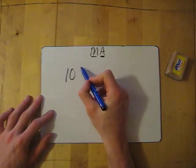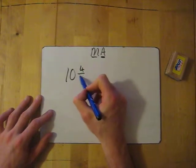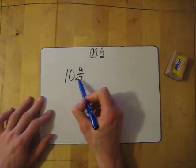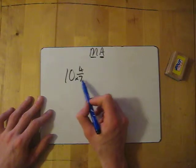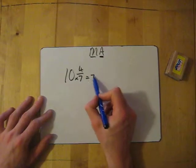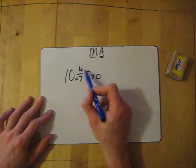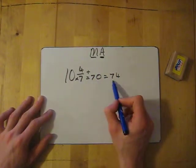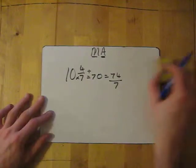10 and 4 sevenths. So MA, multiply and add. So multiply the 10 by the 7, the denominator. 10 times 7 equals 70. Then we add 4 and 70, which gives me 74. And the denominator stays the same. That's it.